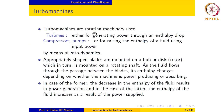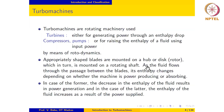Turbo machines are rotating machinery used either for generating power through an enthalpy drop — in which case it will be a turbine — or for raising the enthalpy of a fluid using input power — in which case it could be a compressor or a pump — by means of rotor dynamics. Appropriately shaped blades are mounted on a hub or disc, usually called the rotor, and the rotor in turn is mounted on a rotating shaft. The shape of the blade is such that as the fluid flows into the device and through the passage between the blades, its enthalpy changes depending on whether the machine is power producing or power absorbing.